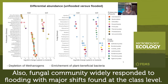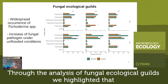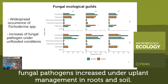Fungal communities also widely responded to flooding, with major shifts found at the class level. Through analysis of fungal ecological guilds, we highlighted that fungal pathogens increased under upland management in both root and soil.